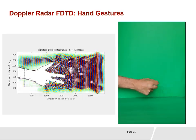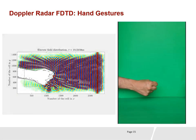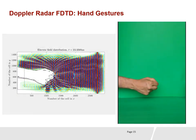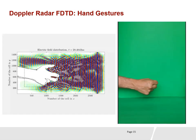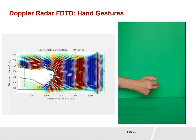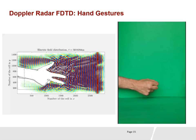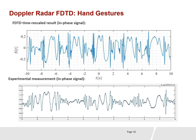We have a Doppler radar in our lab, and this is the experiment we have done with a hand gesture. The left shows the FDTD simulation and the right is the video captured in front of the radar. This is the comparison between results using the in-phase signal: FDTD code on the top and the experimental test on the bottom. We can see a very good match between the FDTD time-rescaled result and the experimental measurement.